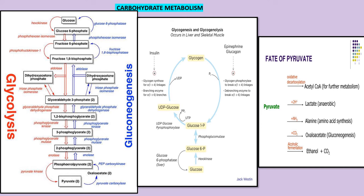Glycogenesis is the formation of glycogen from glucose, catalyzed by glycogen synthase. Glycogenolysis is the breakdown of glycogen into glucose, catalyzed by glycogen phosphorylase. Glucagon and epinephrine activate glycogen phosphorylase, while glycogen synthase is activated by glucose and insulin. UDP-glucose acts as an important high-energy intermediate in glycogen synthesis.